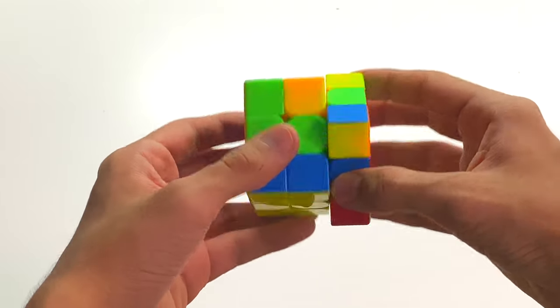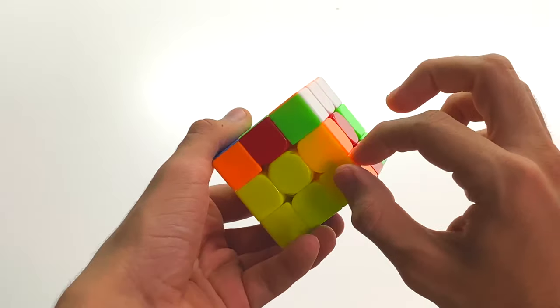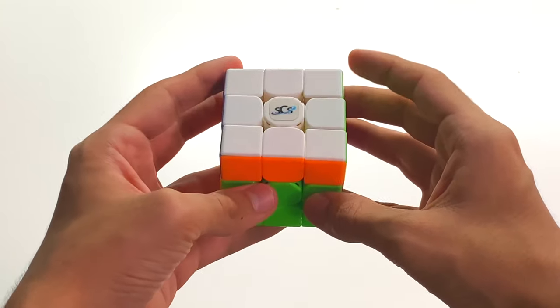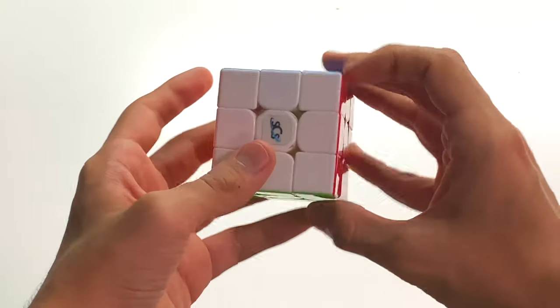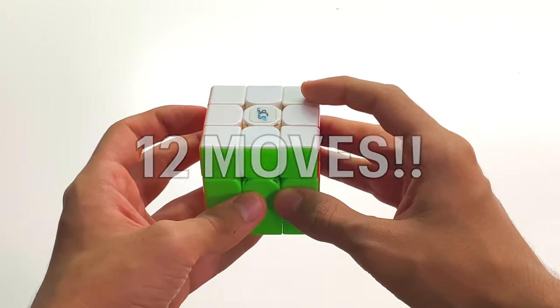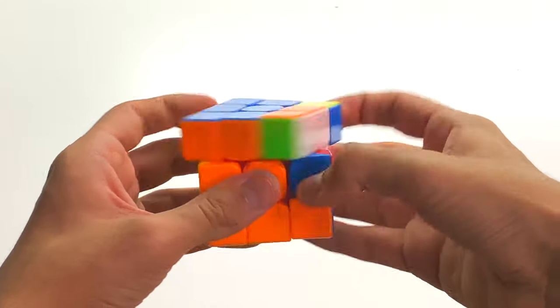And what you can start by doing is an L2 to take this piece out, and then insert this like this, and then insert this piece here, and then do R prime F R prime to insert this, and then F prime D2 to finish your quadruple X-cross in 11 moves. And then you get a U and you're done. You get another last layer skip. That's a 12-move solution.